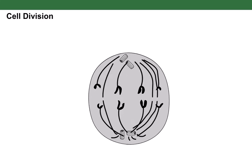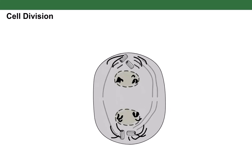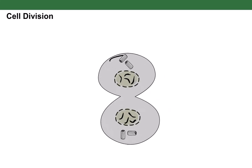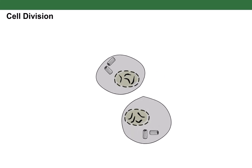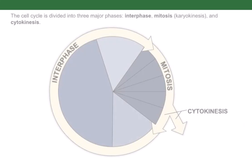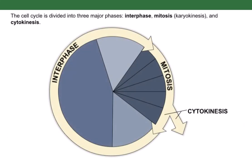Let's learn about cell division. The cell cycle is divided into three major phases: interphase, mitosis, and cytokinesis.